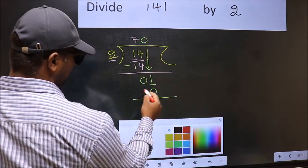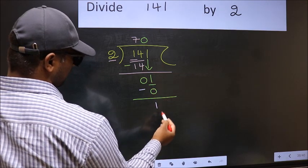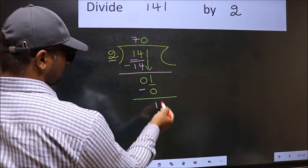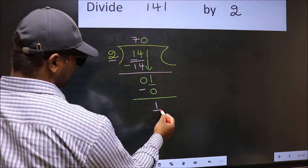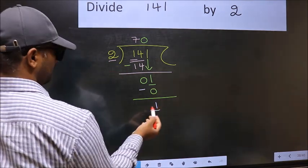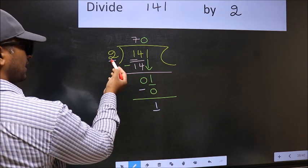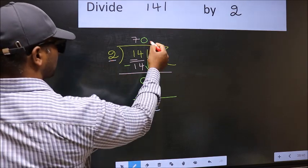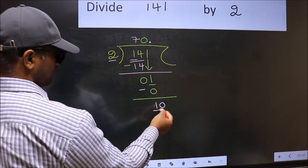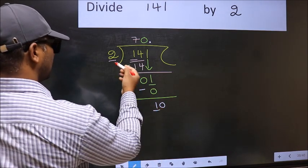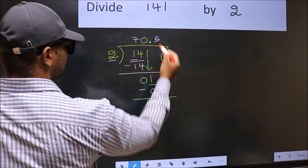Now you subtract. 1 minus 0, 1. Over here, no number to bring down. And we have 1 and 2 here. 1 is smaller than 2. So now you can put a dot and take 0. So 10. When do we get 10 in 2 table? 2 times 5, 10.